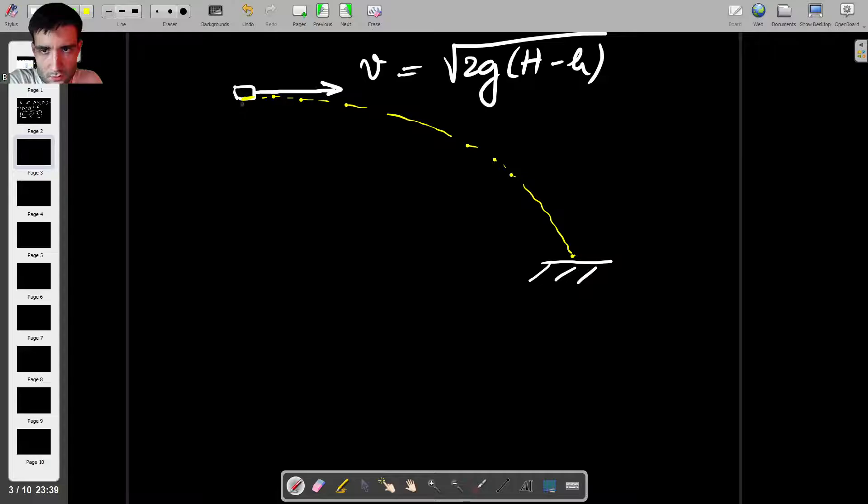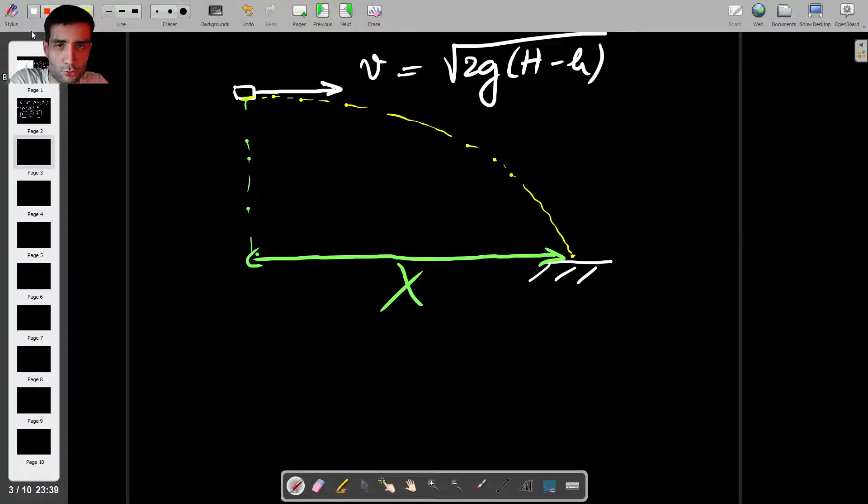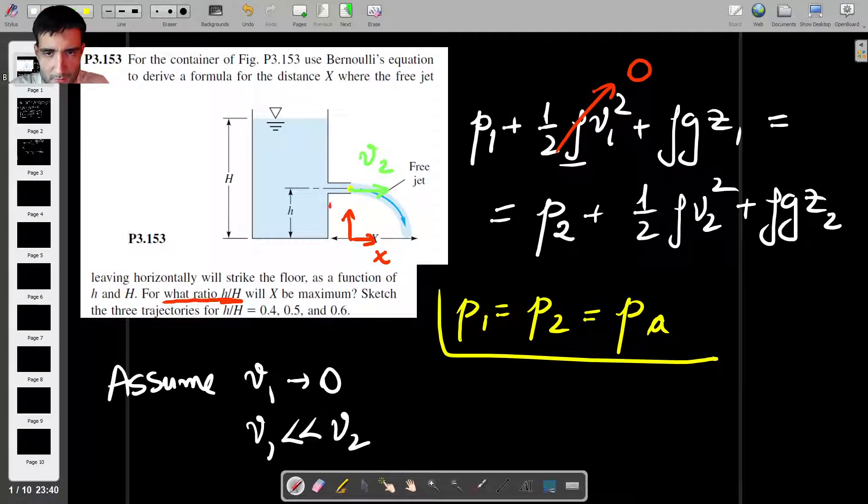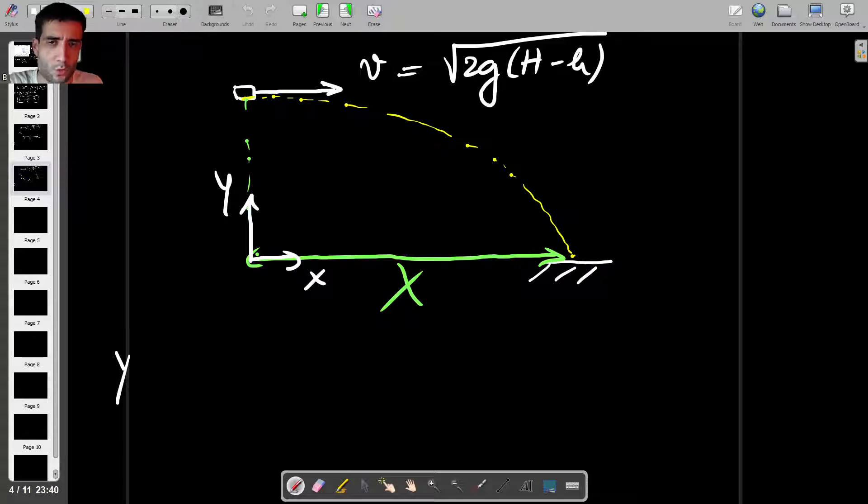I'm just going to call this velocity V instead of V2, just to simplify things a bit. This will be square root of 2G H minus h. Because it's going to be in freefall, we know the trajectory is going to look like a parabola or part of the parabola rather. And what we're trying to find out is an expression for this distance that they call capital X in the question. To do this, we first look at the fact that this water particle has no vertical velocity. So the displacement in the vertical direction, the way I'm going to do this, I'm going to measure everything from here. My XY coordinate system is essentially going to be placed where the water comes out at the base of the tank.